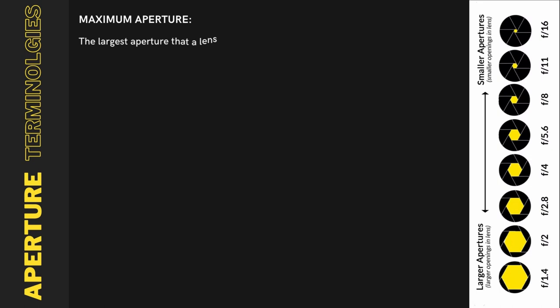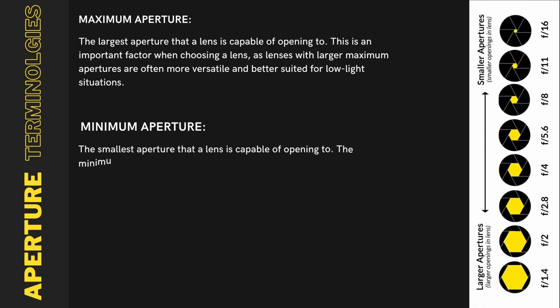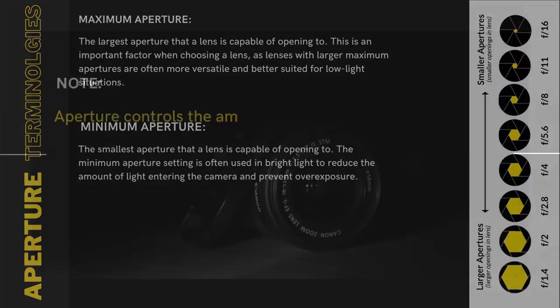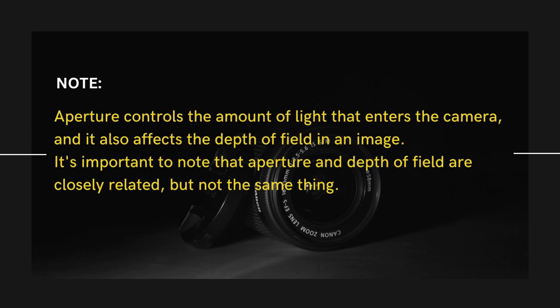The maximum aperture is the largest aperture a lens is capable of opening to. This is an important factor when choosing a lens, as lenses with larger maximum apertures are often more versatile and better suited for low-light situations. The minimum aperture is the smallest aperture a lens is capable of, and is often used in bright light to reduce the amount of light entering the camera and prevent overexposure. Aperture controls the amount of light that enters the camera and also affects the depth of field in an image.